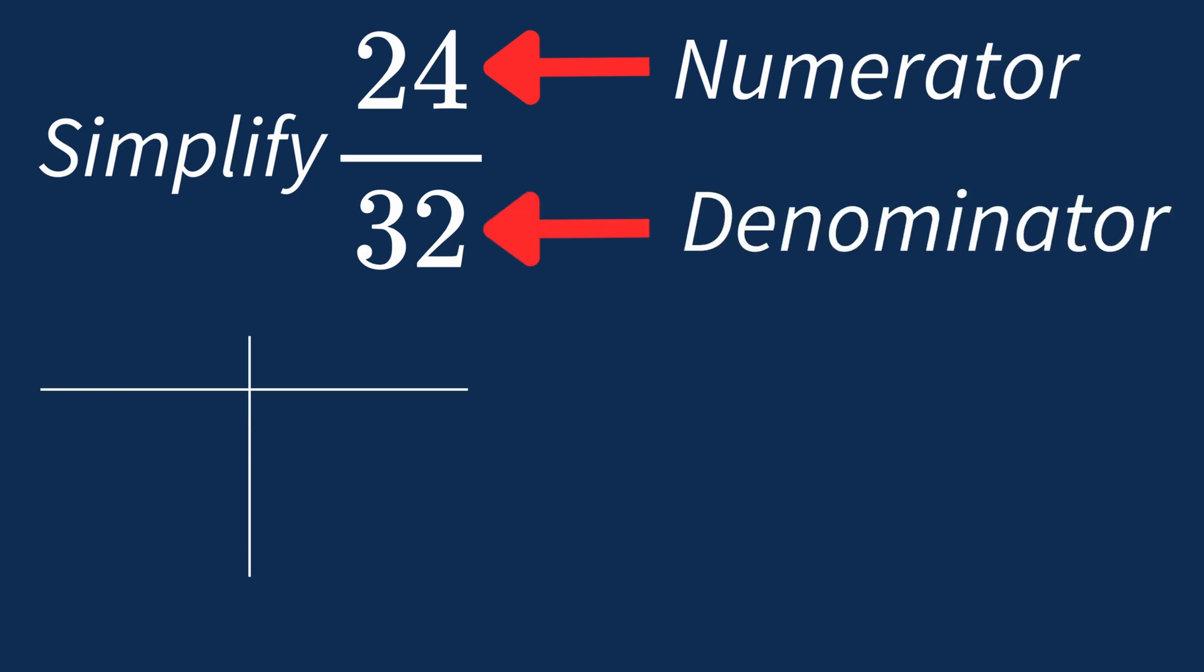First, let's list out the factors for each. For 24, the factors are 1, 2, 3, 4, 6, 8, 12, and 24.